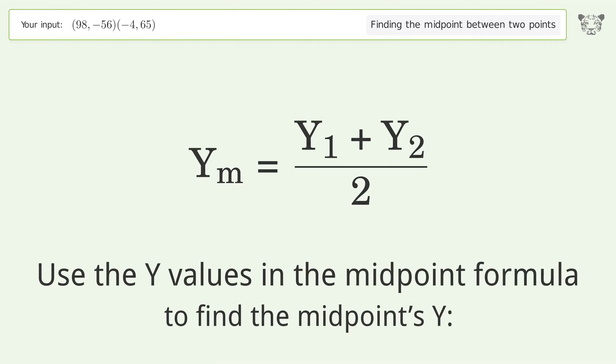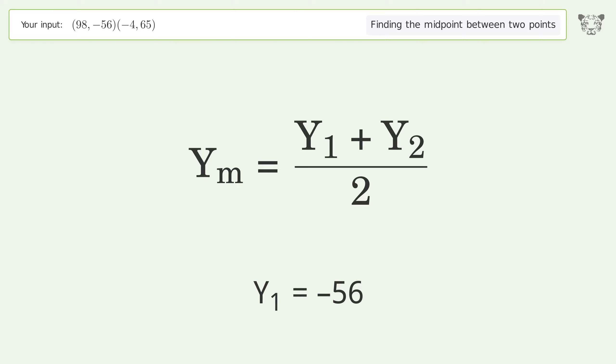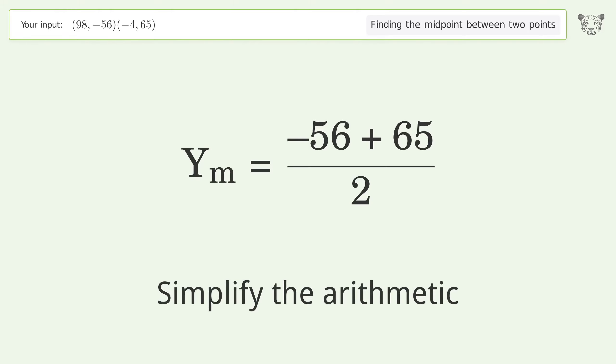Use the y values in the midpoint formula to find the midpoint's y. y1 equals negative 56, y2 equals 65. Simplify the arithmetic.